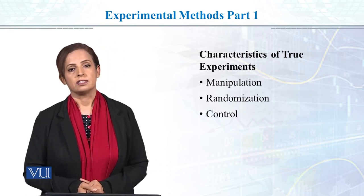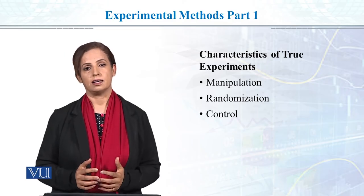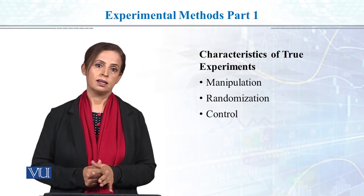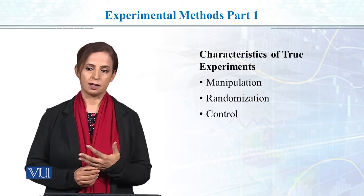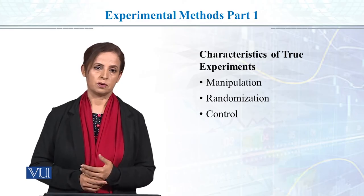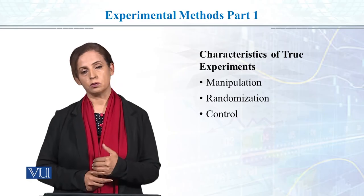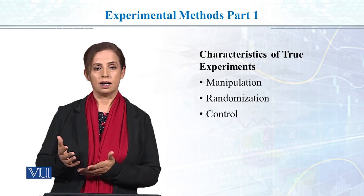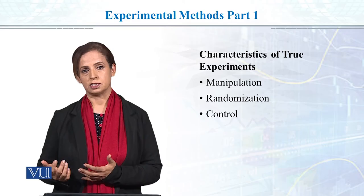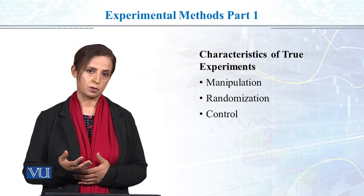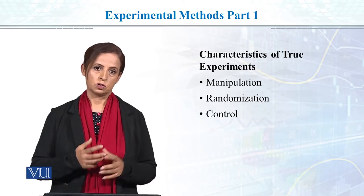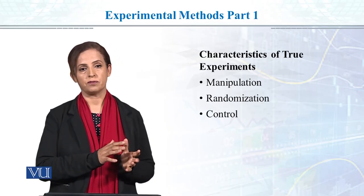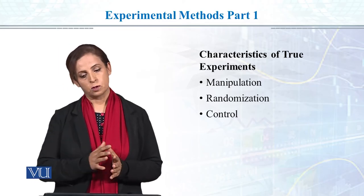The key characteristics of experimental research design are: first, manipulation — we manipulate the independent variable ourselves. For example, if I want to see what effect coffee has on performance, maybe one group gets two cups of coffee after they have learned and another group does not, and then I observe performance after some hours.